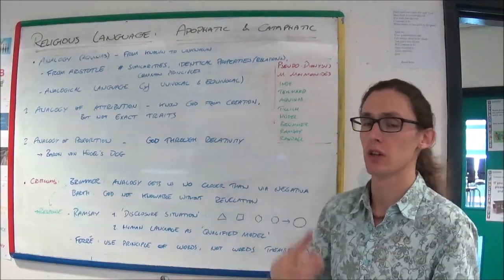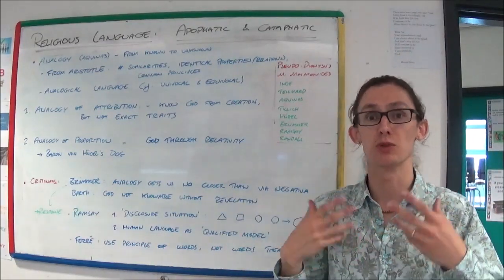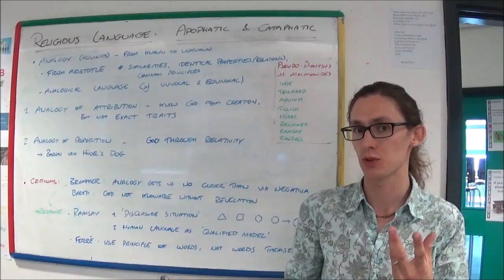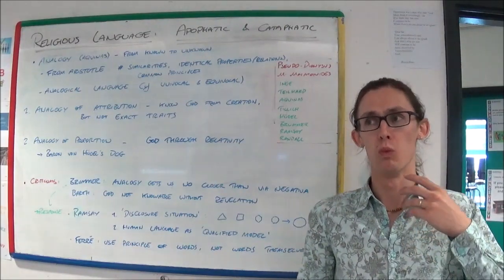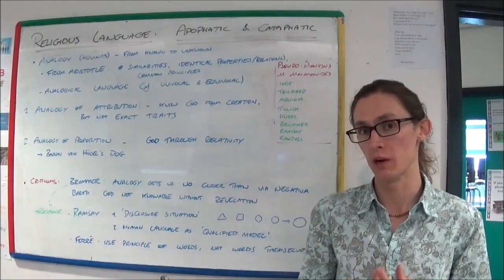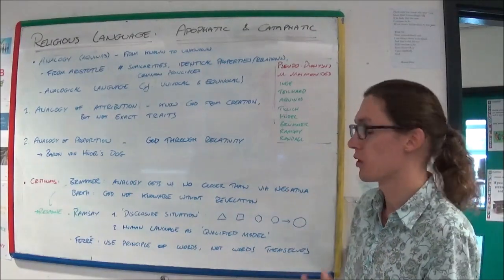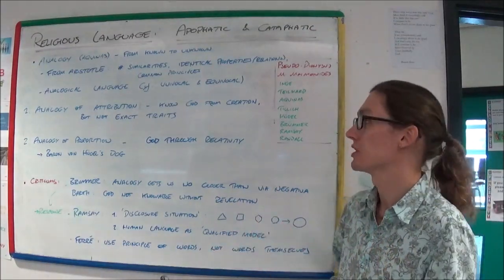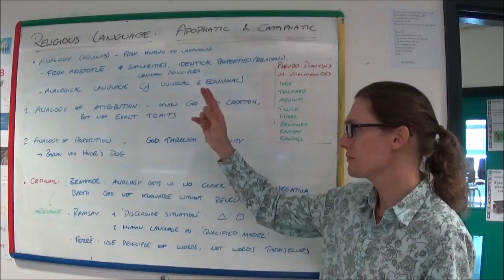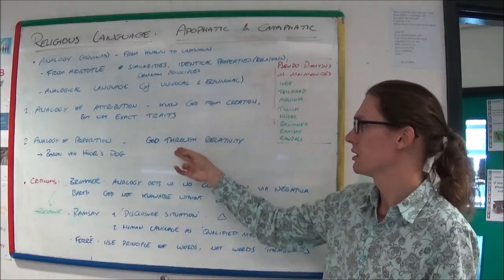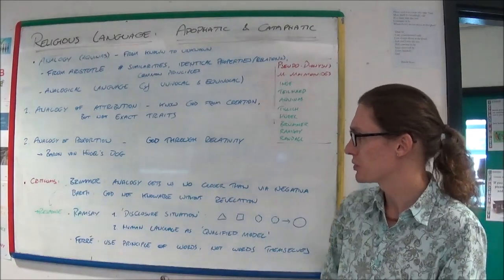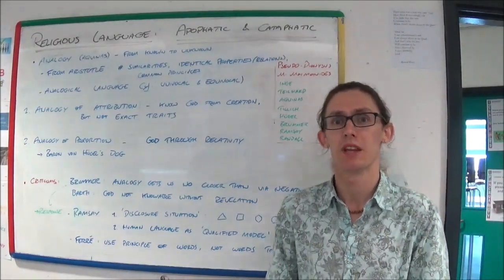So analogical language allows us to use human language in a way that can describe God without suggesting that we truly know what God is like. It seems to get around the problem of how to describe God in a positive way. And he's got two aspects. There's an analogy of attribution and an analogy of proportion.